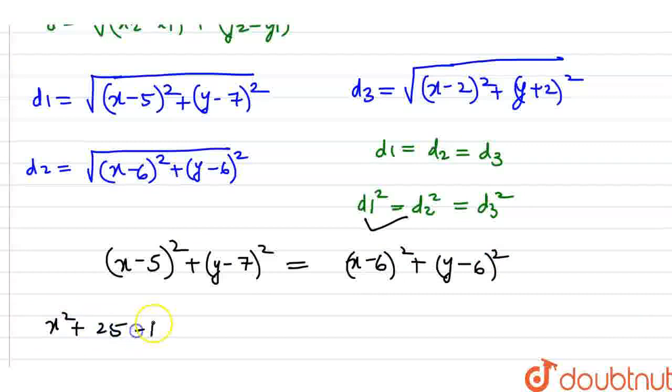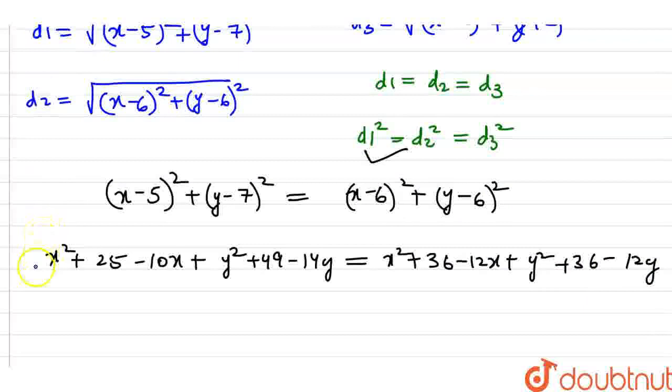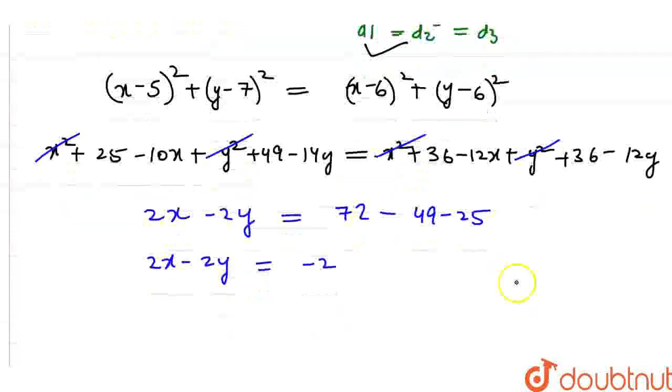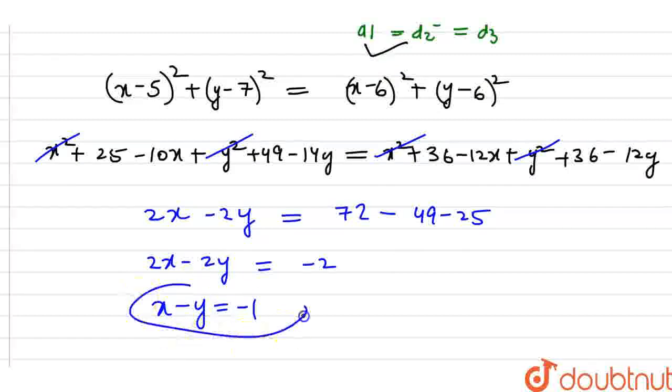Expanding, x square and y square cancel. We get minus 10x minus 14y equals minus 12x minus 12y, then 2x minus 2y equals 72 minus 74, so 2x minus 2y equals minus 2. Dividing by 2, x minus y equals minus 1. This is the first equation.